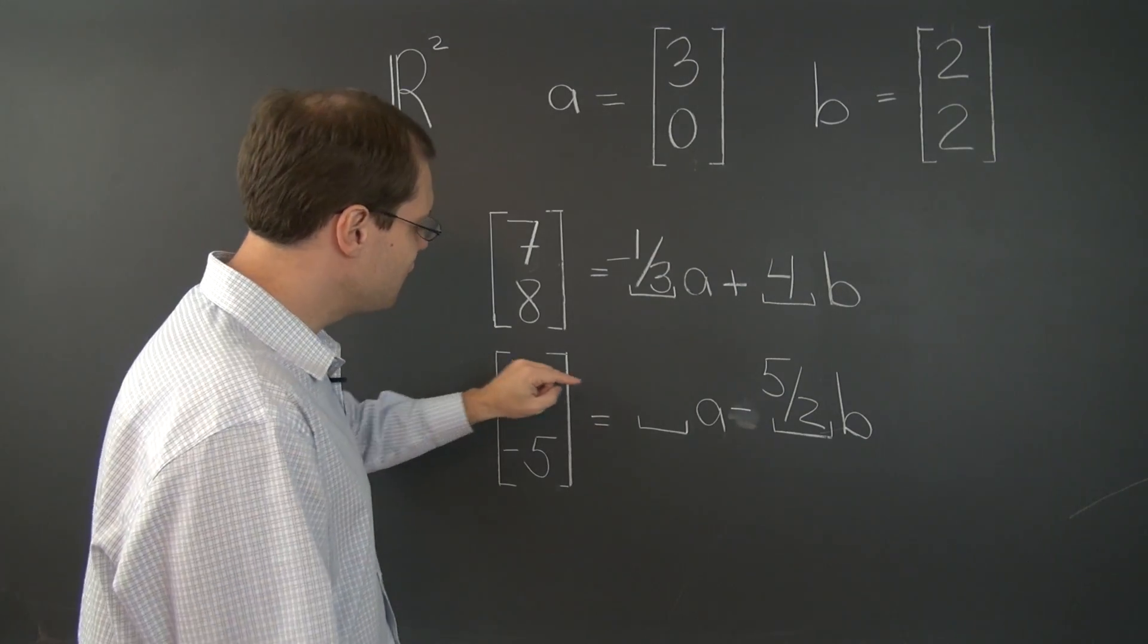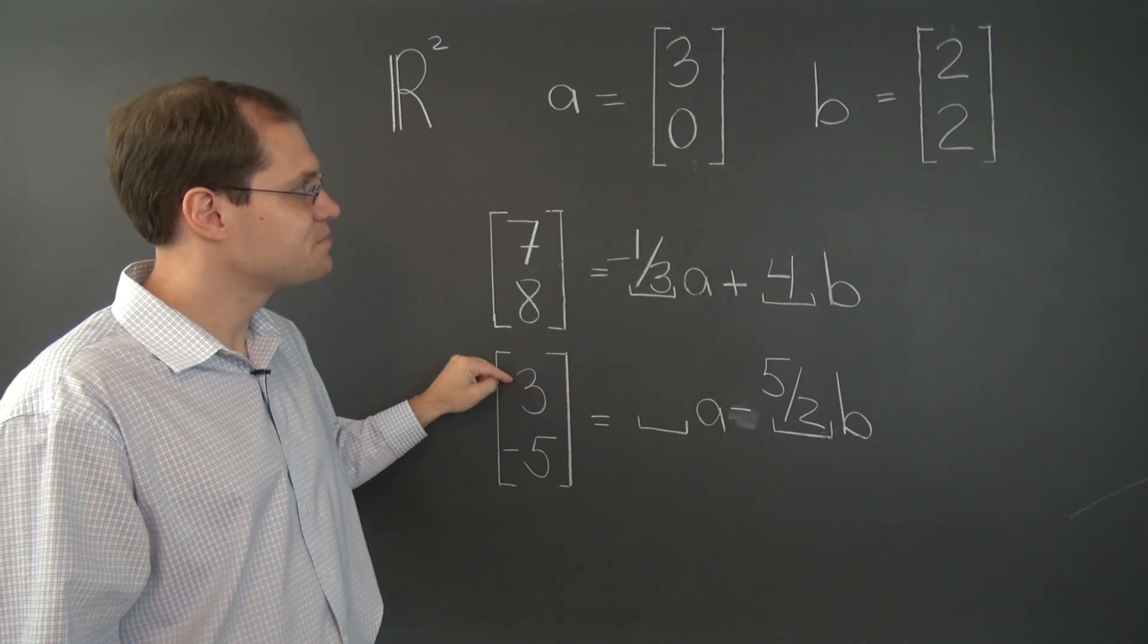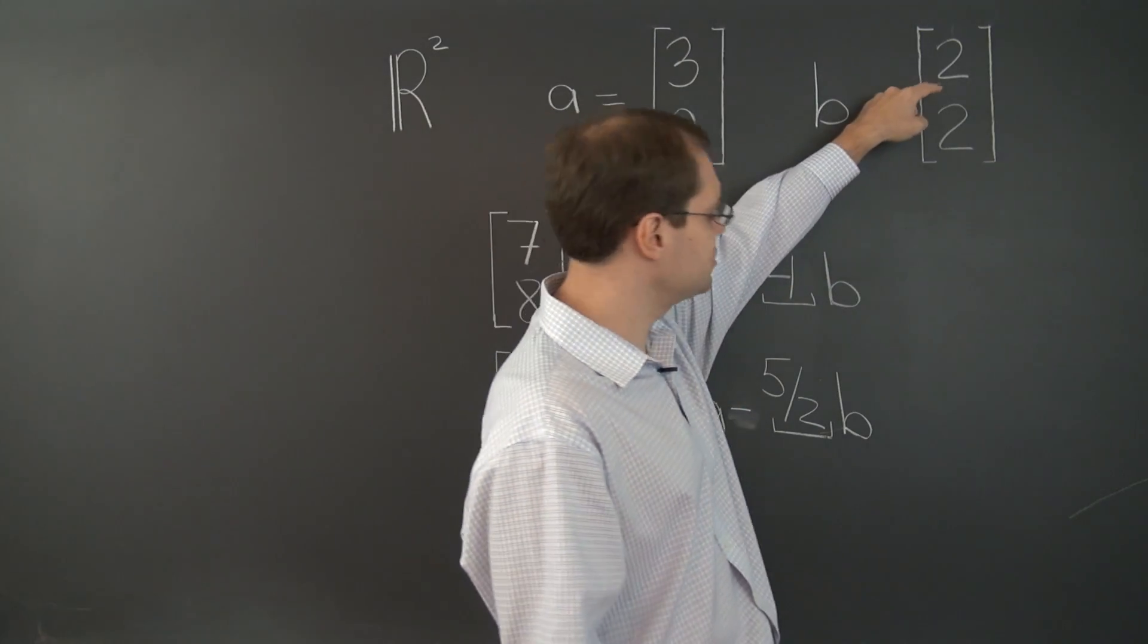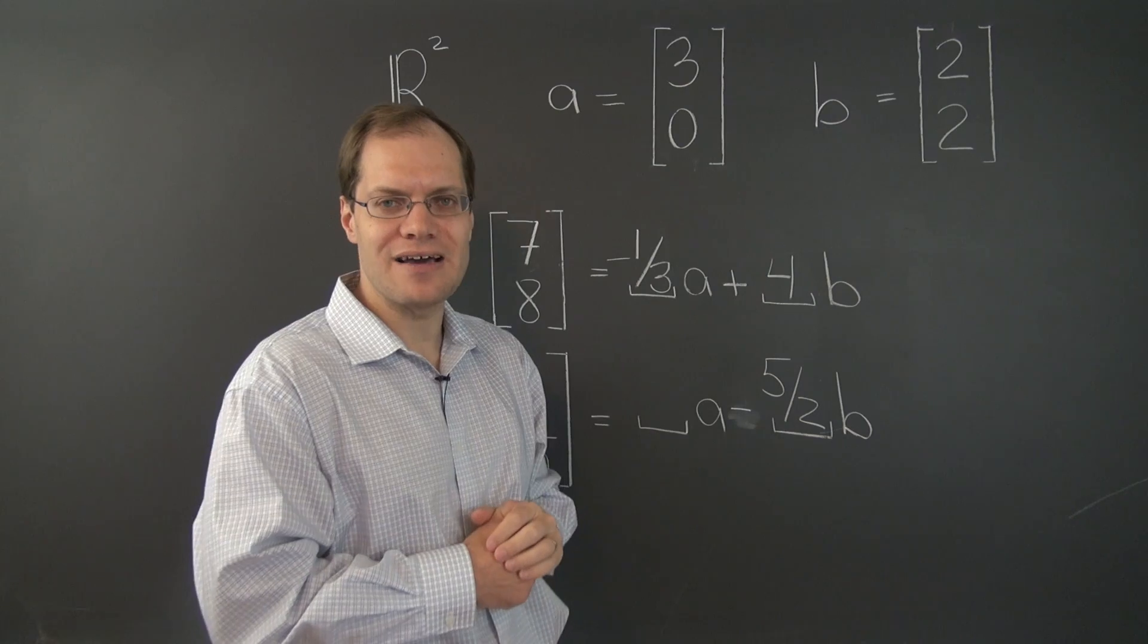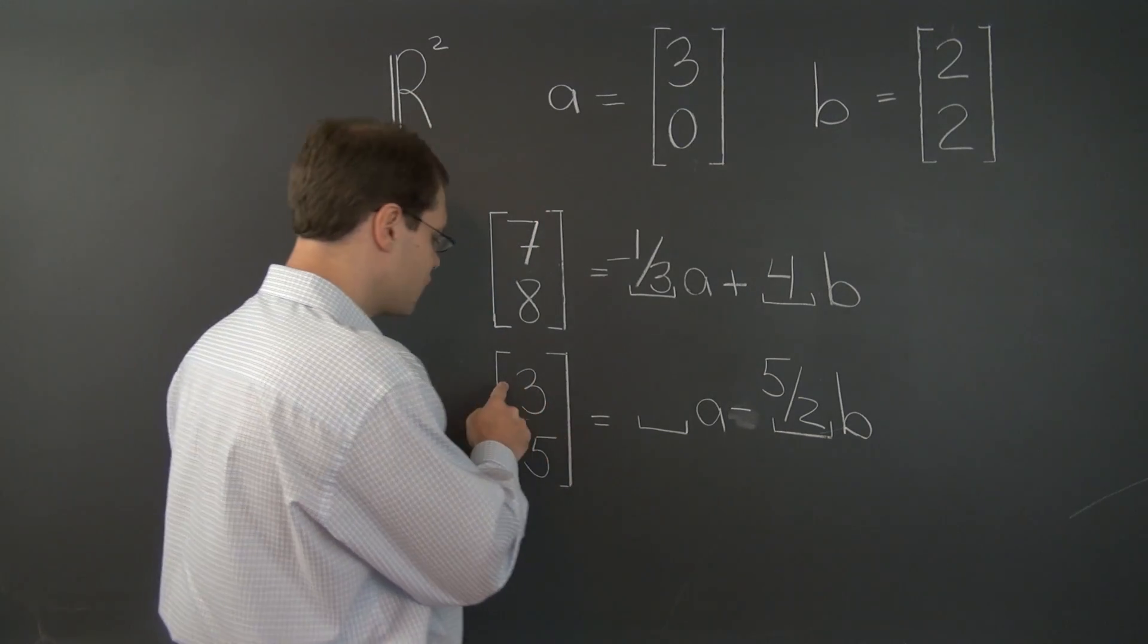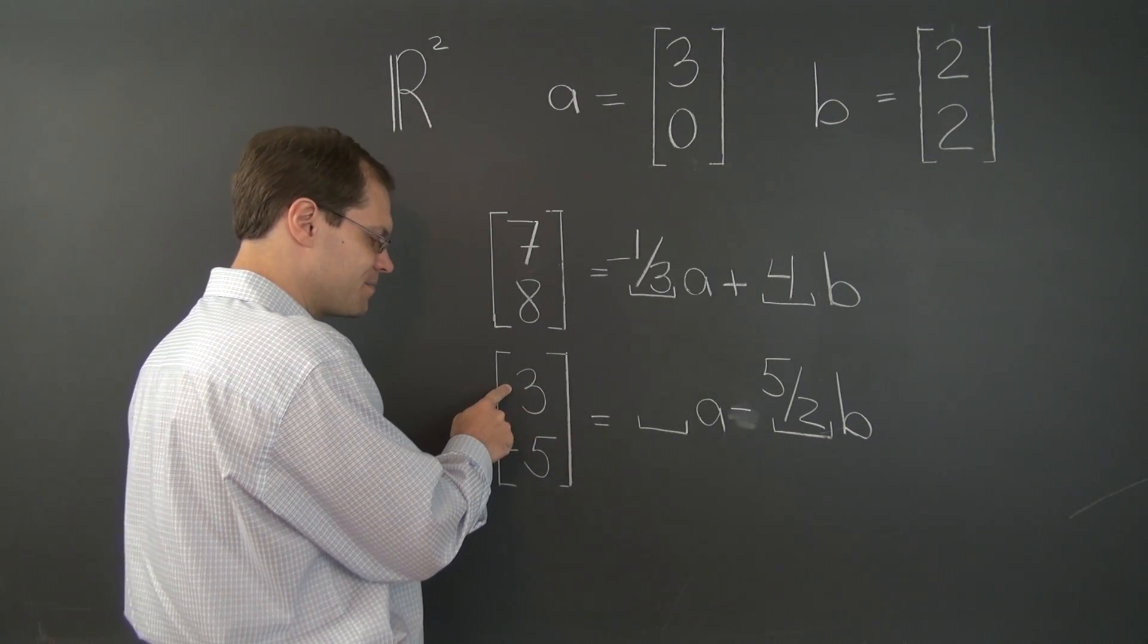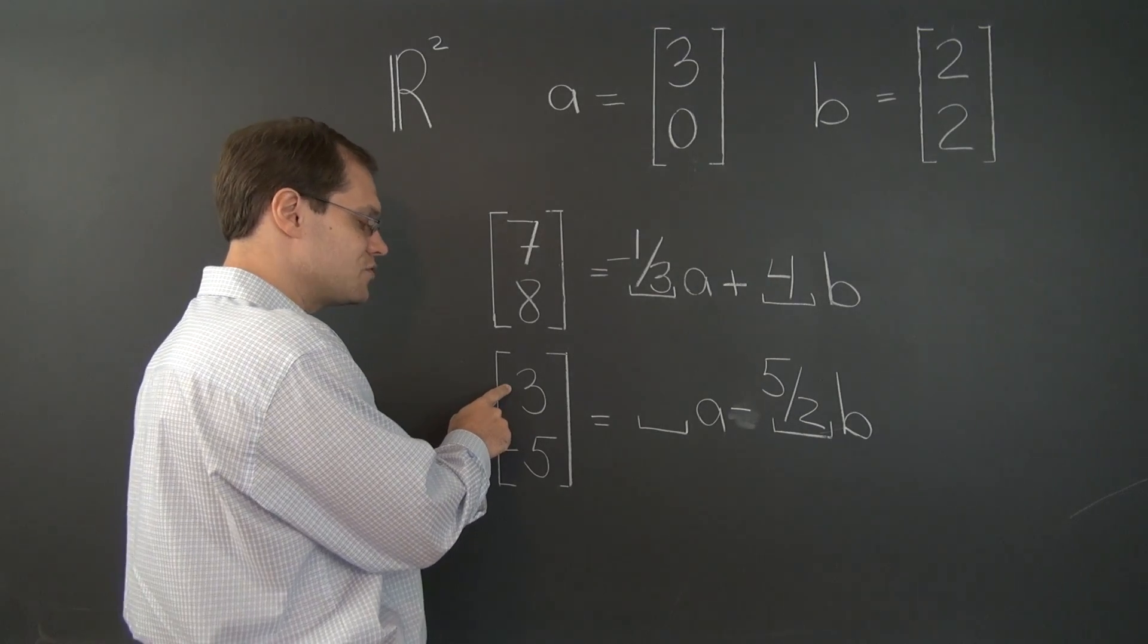Now we have to fix up the first entry. Because the contribution from B to the first entry so far stands at negative 5. So we have to go from negative 5 to 3. In other words, we have to jump by 8.